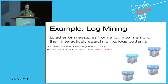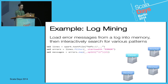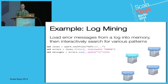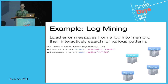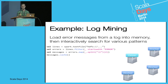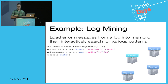Now we can do more complex processing — we're going to break this up by tabs and take only the second item, which is the message. Now we've got a collection of all the error messages. Since we're probably going to want to look at this multiple times, we can call messages.cache. This is a lazy operation, but it signals that when we compute this RDD, we want to persist that data in memory so we can scan over it again more efficiently without reloading from HDFS.